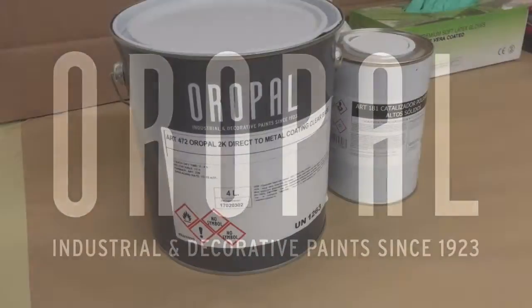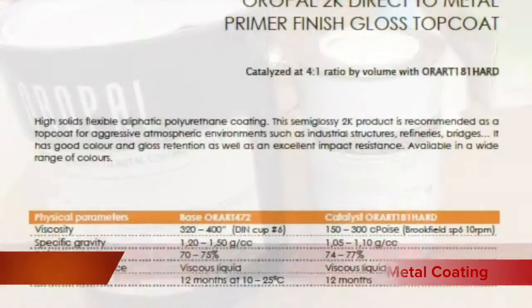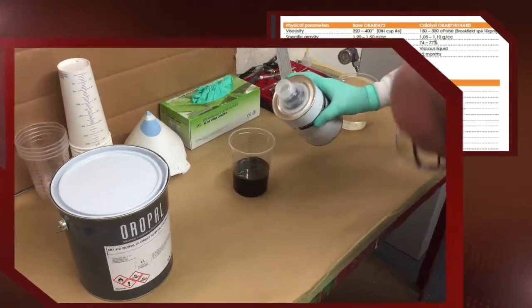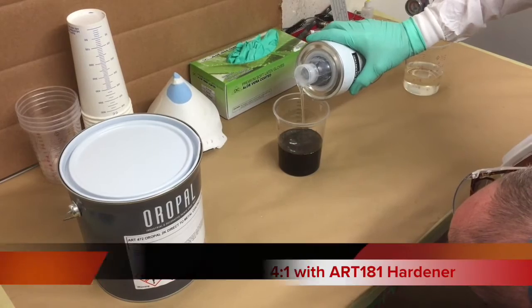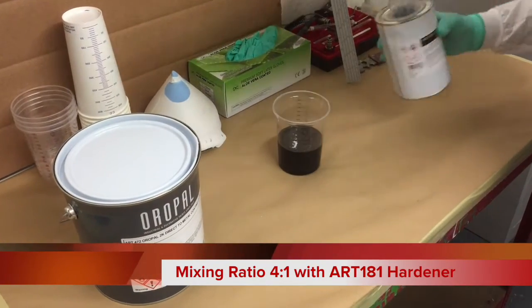Today's Moab Technical Hotspot focuses on a new 2K direct metal coating from premium metal coatings manufacturer Oropal. Oropal 472 is a two-component glossy polyurethane coating that can be applied direct to both ferrous and a selection of non-ferrous substrates as a one-product system.